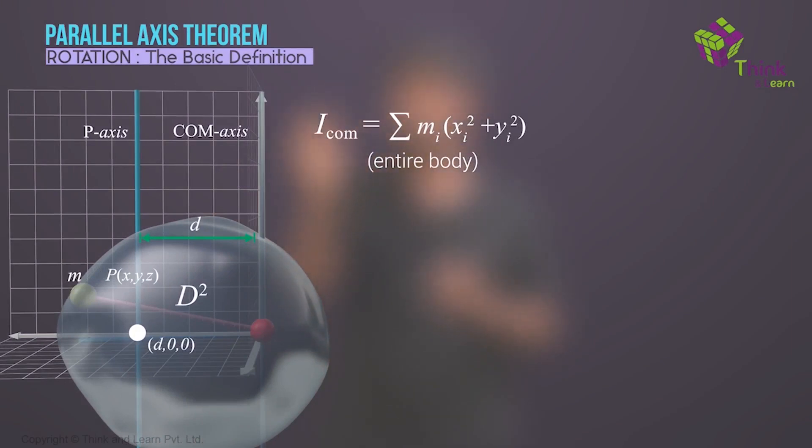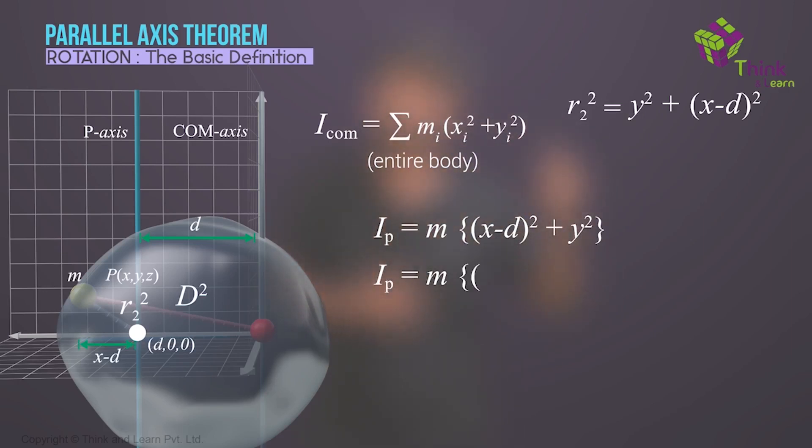But what is the moment of inertia of this point about this new axis, the P axis? You need the distance from that axis squared, multiplied by the mass. So the mass is m, multiplied by that distance, let's call it r2 squared. But what is r2 squared going to be? It's going to be y squared plus, instead of x, it's going to be x minus d. So you can write it as m into (x minus d) the whole squared plus y squared. This is going to be equal to m into, if you expand that term, x squared plus d squared minus 2 into xd plus the y squared that is there already. So we will rearrange this so that you get m into (x squared plus y squared) over there, plus m into d squared minus 2 into mx into d.